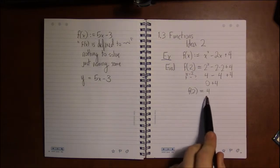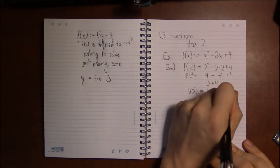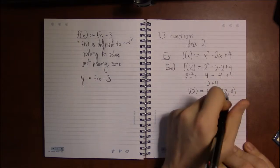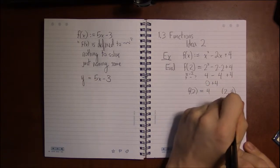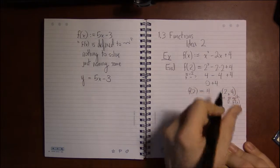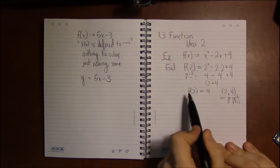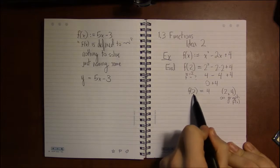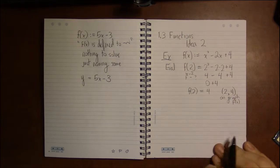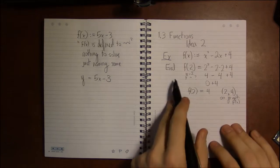And so this is telling me that if I graphed this parabola, when x is 2, y is 4, this point is on the graph of f(x). So this gives us another way to write points, that we can put f(x value) equals the y value and describe a point on the graph of f(x). But that's a side note.